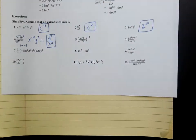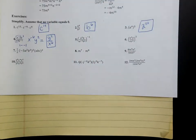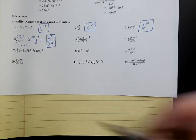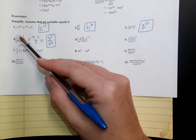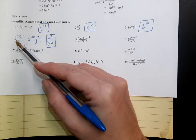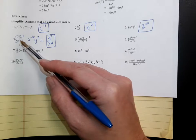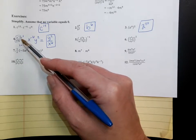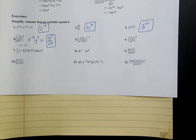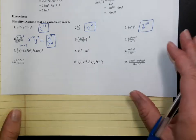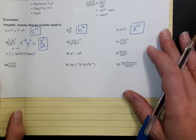That's probably the way I would have worked this question. Now, there are other strategies too. Some people prefer to move the negative exponents where they belong first — like to say that's an x to the negative 2, which really means you have an x squared in the denominator. That's a y to the negative 1, which really means you have y to the 1st in the numerator, and then just simplify it that way. That is completely up to you — different strategies, different ideas.